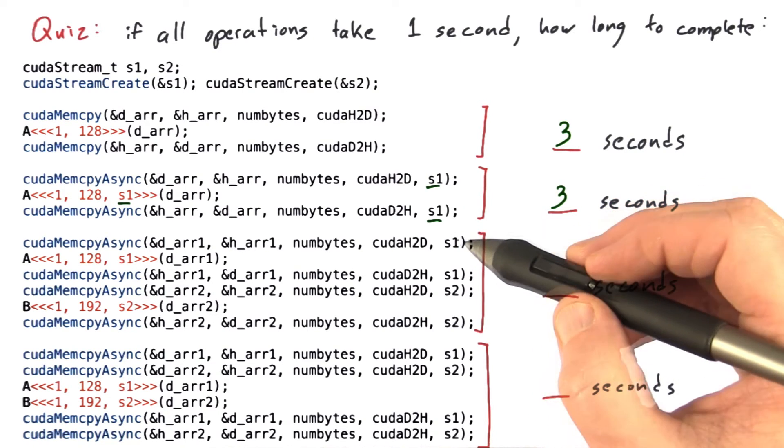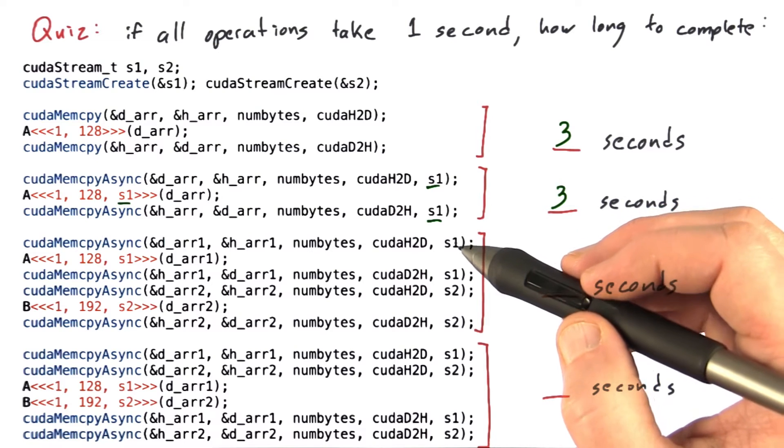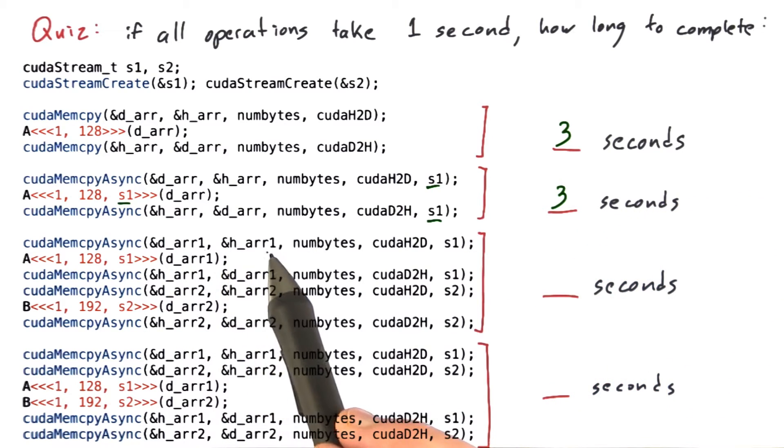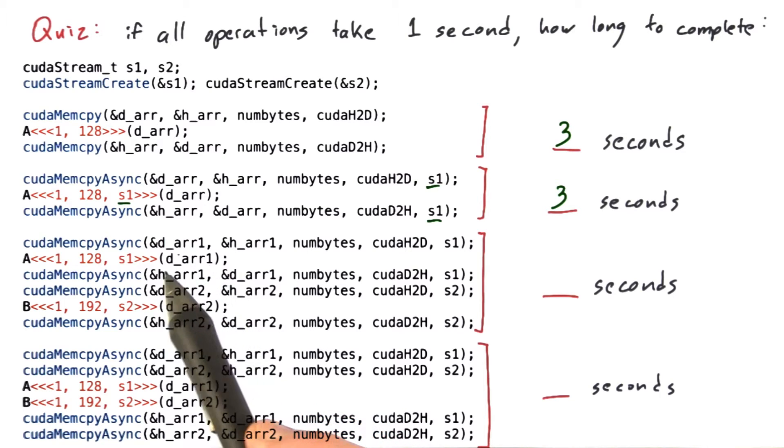This one's a bit more complicated. Here I'm doing two operations on different chunks of memory. I'm copying h_array 1 into d_array 1, calling kernel A on d_array 1, and copying d_array 1 back to h_array 1.